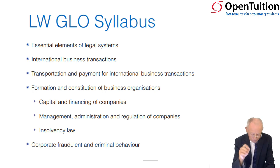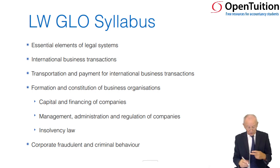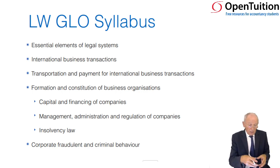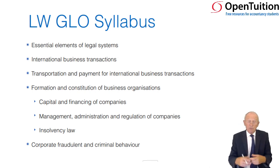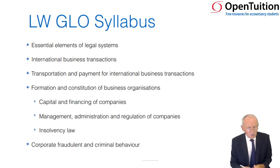We then move on to two areas that are specifically global and not at all included in the English variant. These two are international business transactions. In global law, we need to consider sales and purchases by a manufacturer in one country to a purchaser in another — from a Nepal manufacturer being sold to Germany, for instance. There's a lot of documentation involved in these international business transactions.